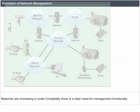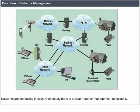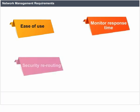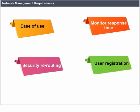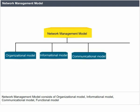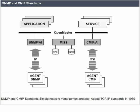Evolution of network management: networks are increasing in scale, and there is a clear need for management functionality. Requirements of network management include ease of use, monitoring response time, security rerouting, and user registration. The network management model consists of an organizational model, informational model, communicational model, and functional model. SNMP and CMIP standards — Simple Network Management Protocol was added to TCP/IP standards in 1989.